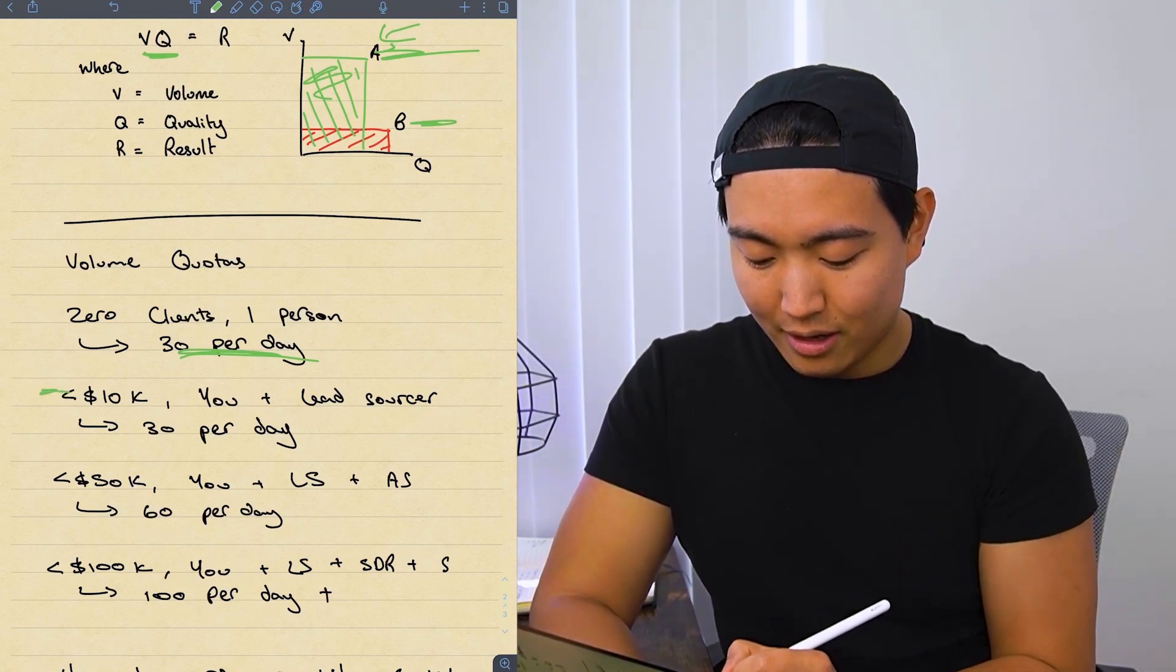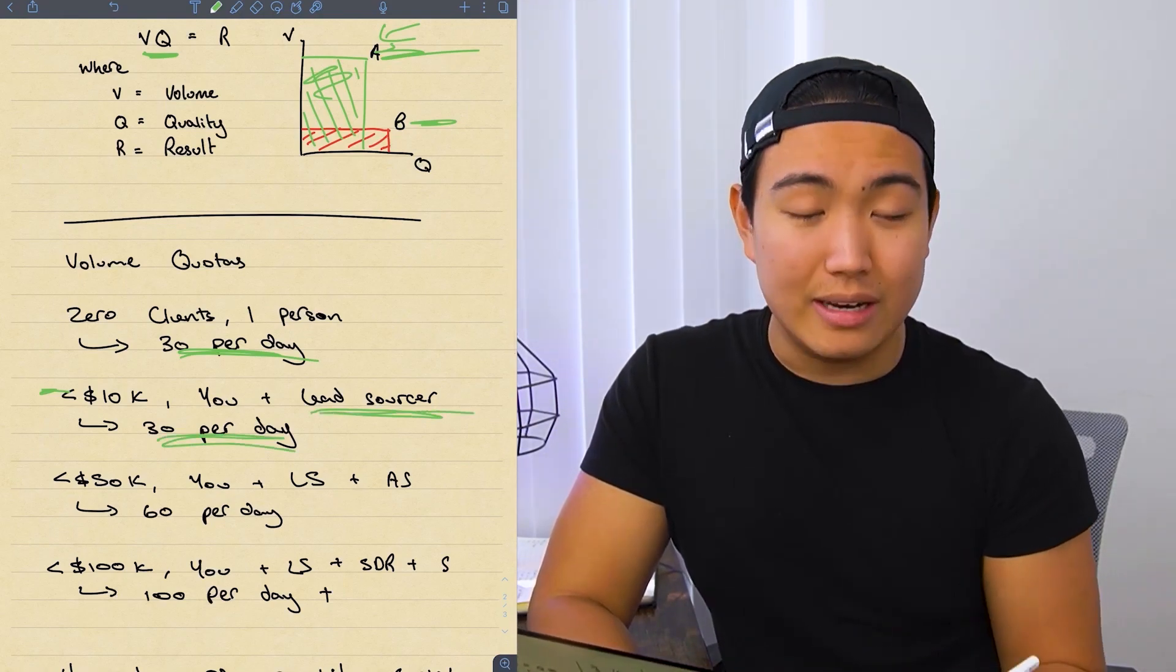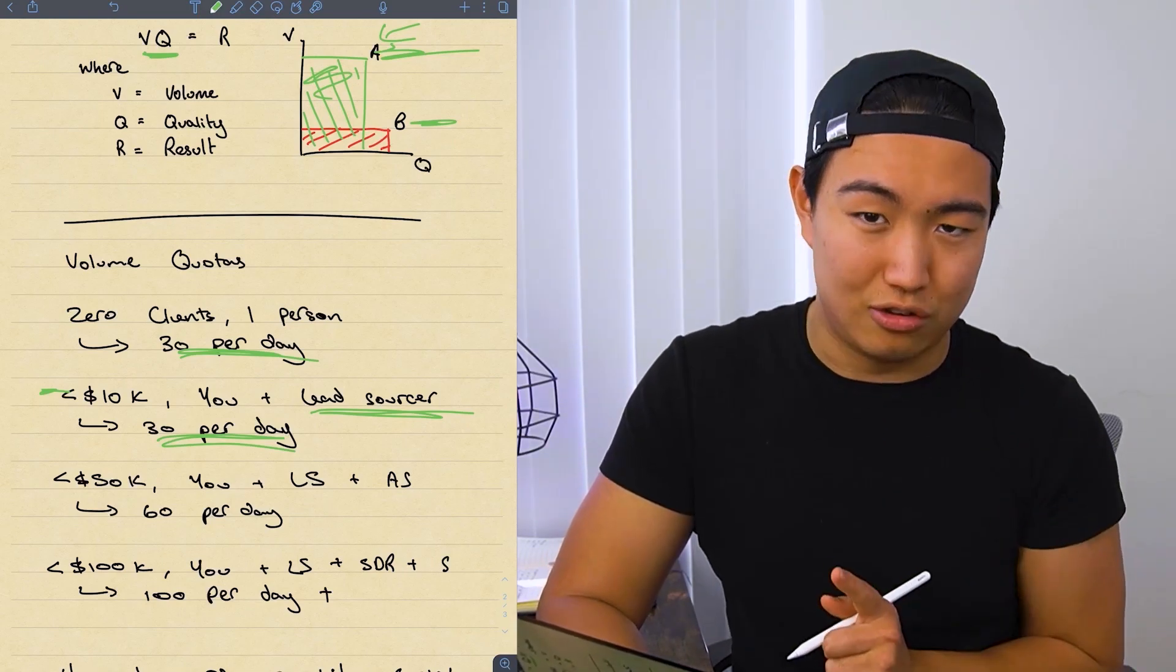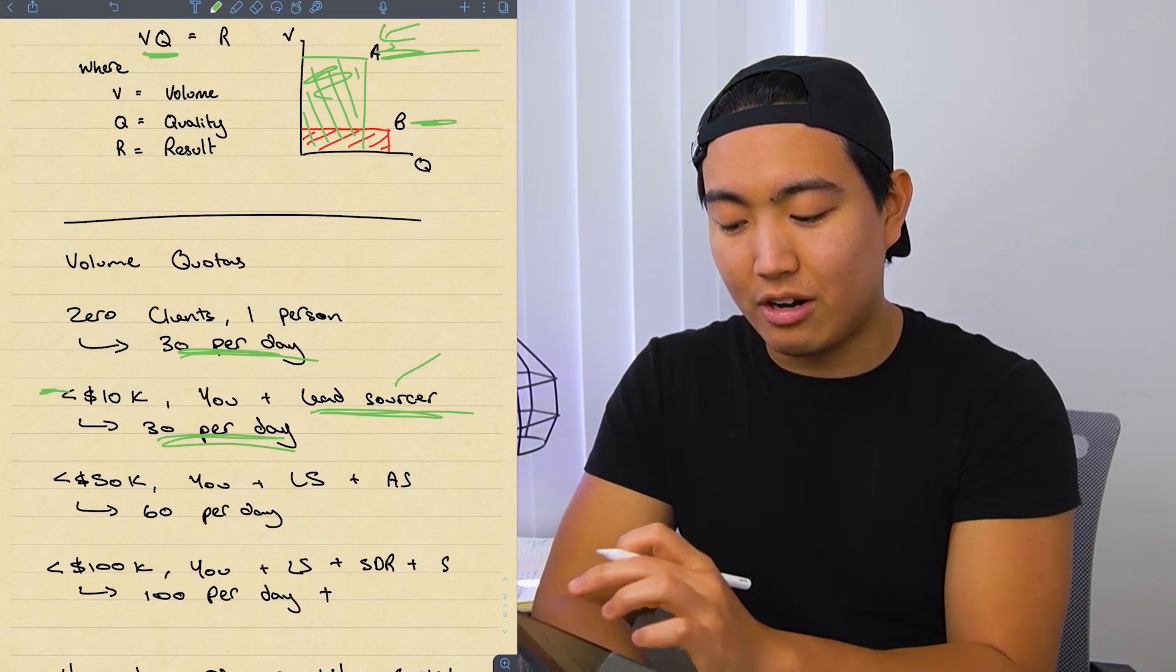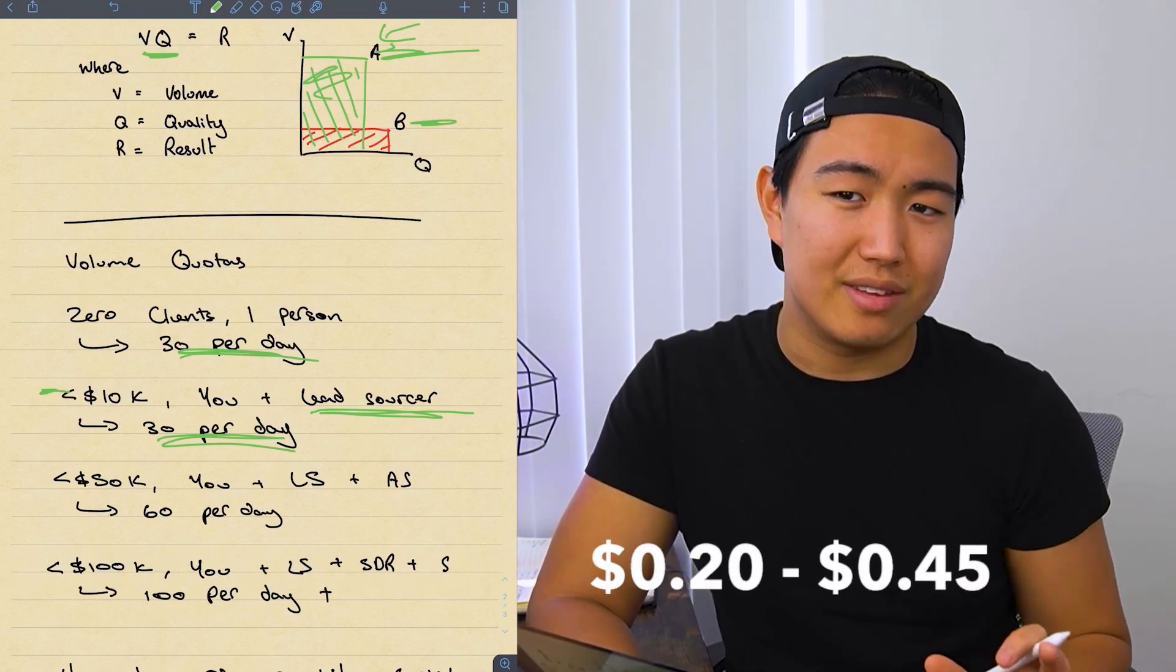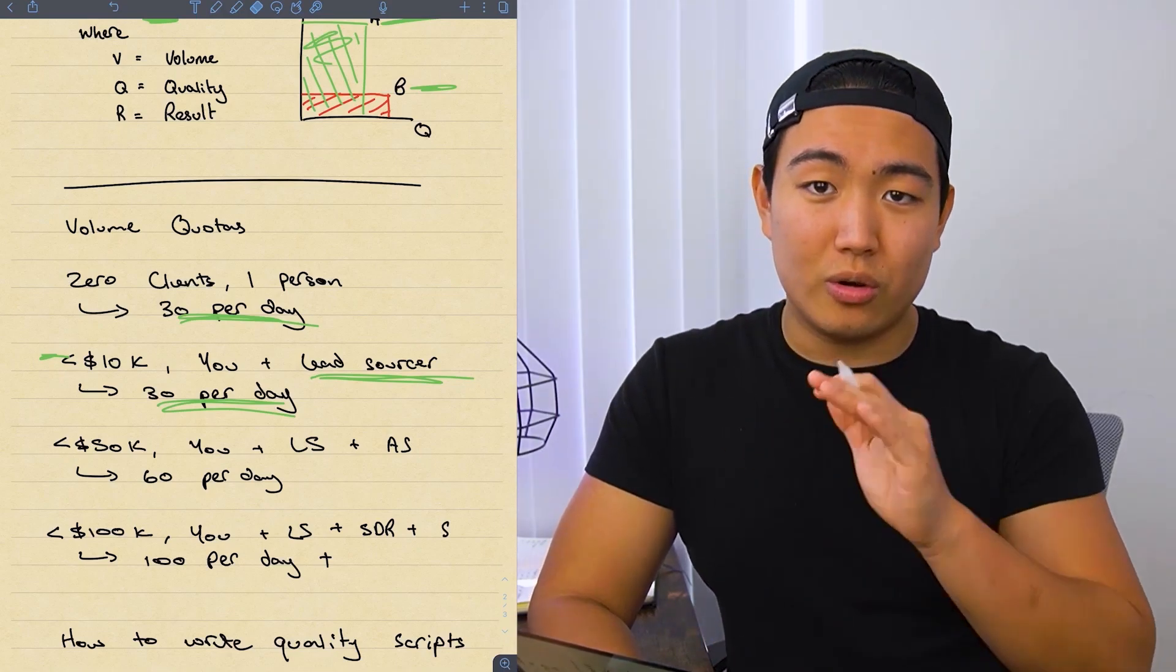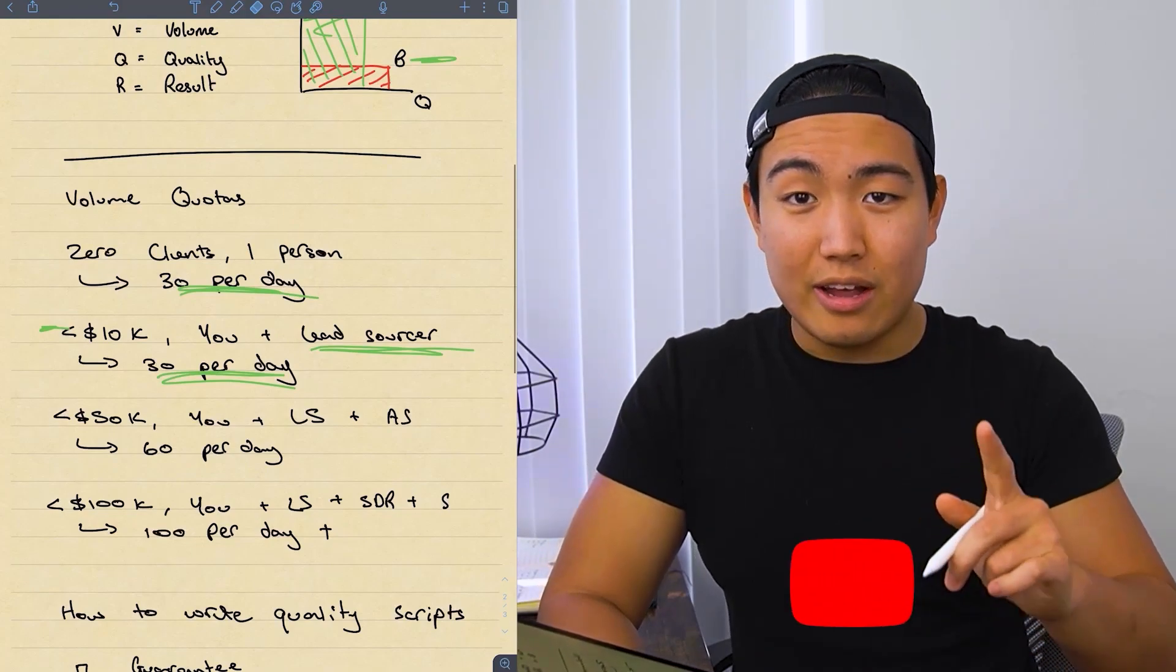If you have a couple of clients but you're less than 10,000 a month, you should be sending still 30 a day, but you need to outsource to a lead sourcer because finding the leads and generating the leads is actually the time-consuming part. So you want to be outsourcing the cheapest task and lead generation. You can typically buy leads for anywhere from 20 cents all the way up to around 45 cents, depending on how qualified they are. So it will be you and a lead sourcer if you're doing less than 10k a month and you're still sending 30 a day.